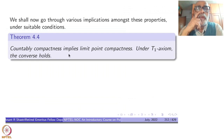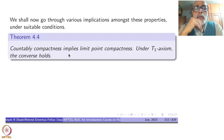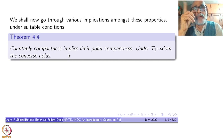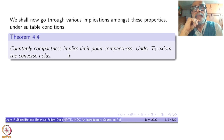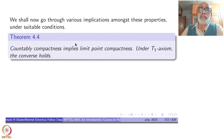Now let us establish some positive implications. The first result is: countable compactness implies limit point compactness. Under the T1 axiom, the converse also holds. So under T1, countable compactness and limit point compactness are equivalent.